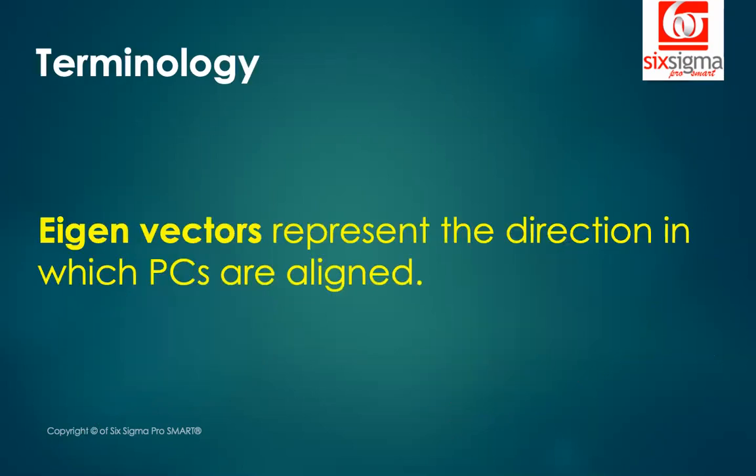A bit of terminology: we always talk about eigenvectors when discussing principal components. An eigenvector is nothing but the direction of the principal component. In the previous example, PC1 and PC2 were pointing in certain directions — they have their respective eigenvectors, which are simply a representation of direction. But how do we decide which principal component is more important? Until we can assign relative importance to principal components, we cannot achieve dimension reduction.